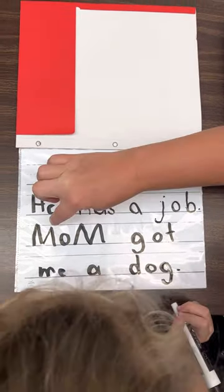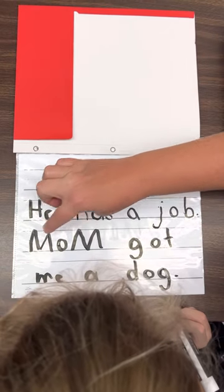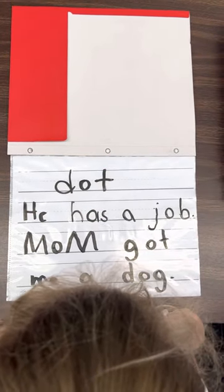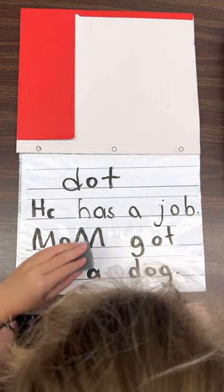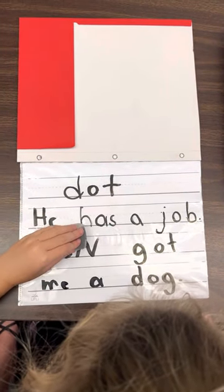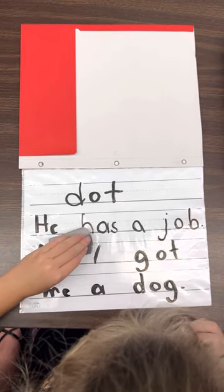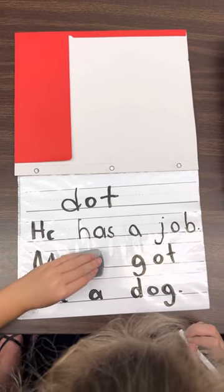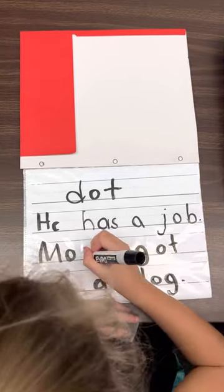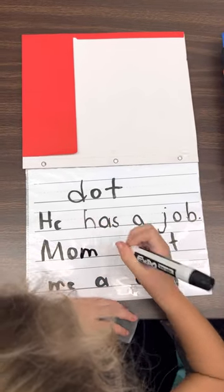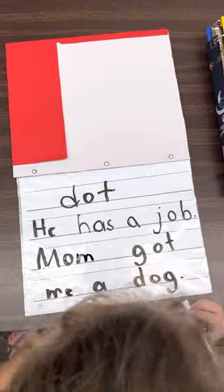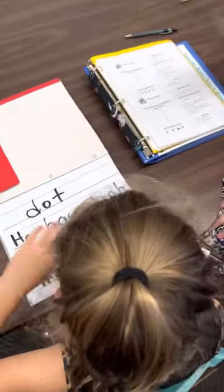Well, you started with a capital letter. That was very smart. But we have a capital on the end. Let's change that to a lowercase letter. Because we never put a capital in the middle of a word or the end of a word. So, our lowercase m starts on the dotted line. Super. High five. Oh, yeah.